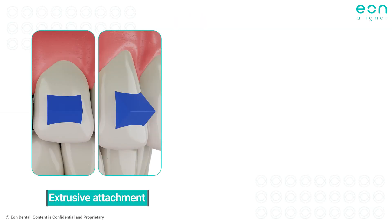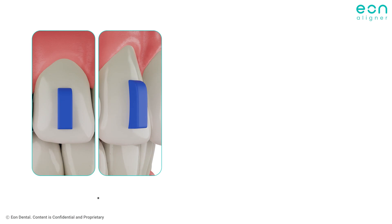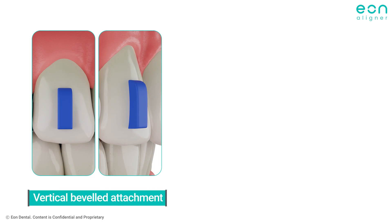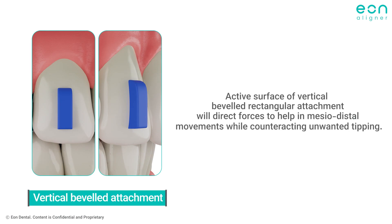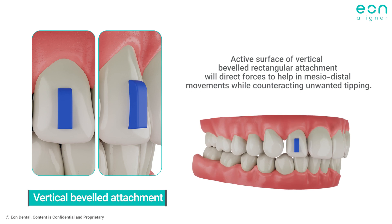We can also use the gingivally beveled extrusive attachment when the major planned movement is extrusion with no rotation or root uprighting planned. And finally, when pure mesiodistal bodily movement is planned — especially in cases of midline correction — the vertical beveled rectangular attachment is to be used. Its active surface will direct forces to help in the mesiodistal movement with an opposing force to counteract unwanted tipping.